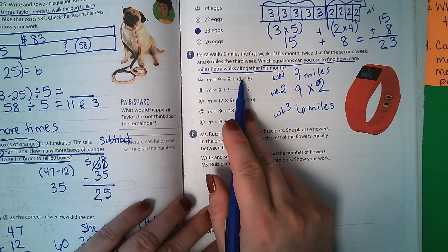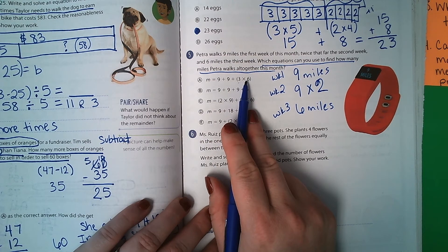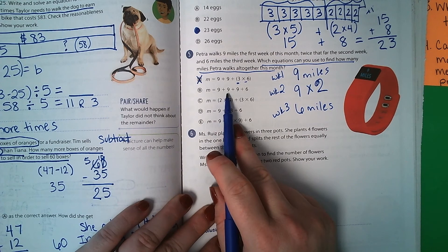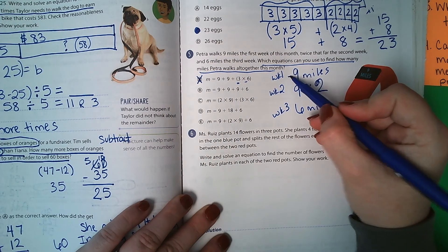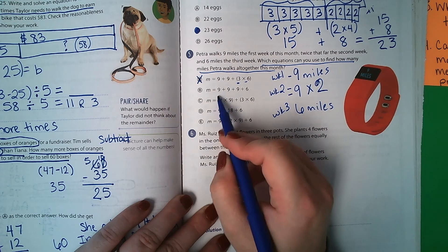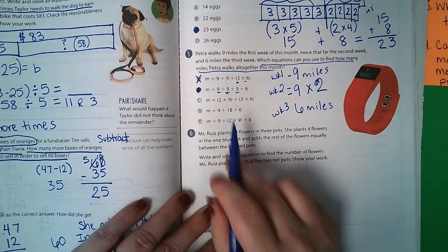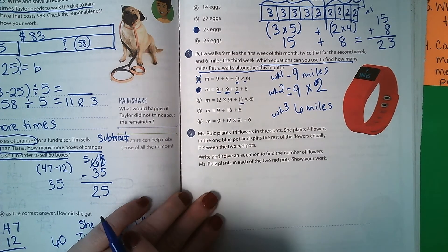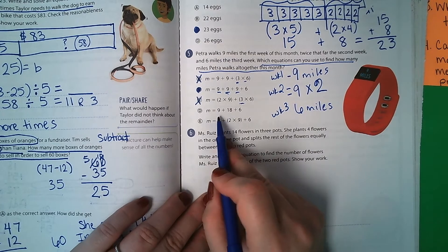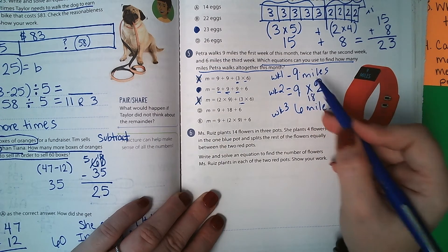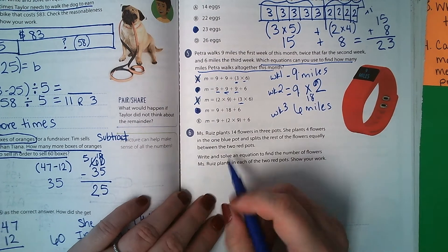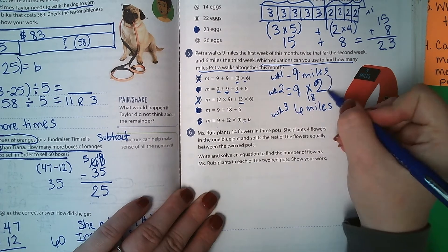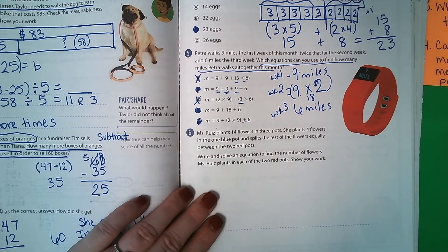9 plus 9 plus 3 times 6. Where did the 3 come from? I have no idea. That one can't be right. 9 plus 9 plus 9 plus 6. Well, here's 9 1 time, 9 2 times, 9 3 times, and 6. So 1, 2, 3, and 6. Yep, this one will work. 2 times 9, that's what we've got, plus 3 times 6. Again, I don't know where that 3 is coming from. So this one's wrong. 9 plus 18 plus 6. Well, if you look here, 9 times 2 is 18. So 9 plus 18 plus 6. Yes, this one will work. 9 plus 2 times 9 plus 6. Yes, this one would also work. That's what we have here. 9 plus 2 times 9 plus 6. And that's it.